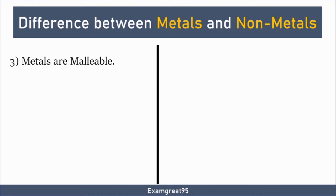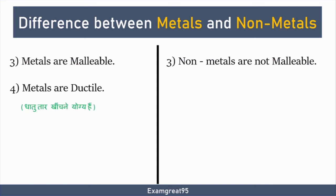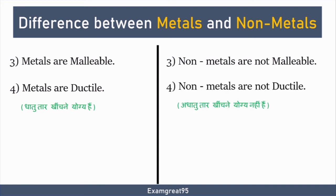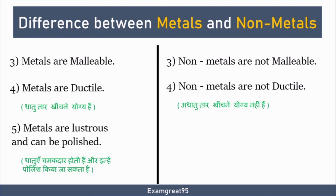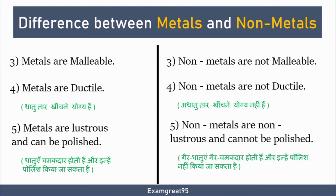Number 3: metals are malleable, and nonmetals are not malleable. Number 4: metals are ductile, and nonmetals are not ductile.